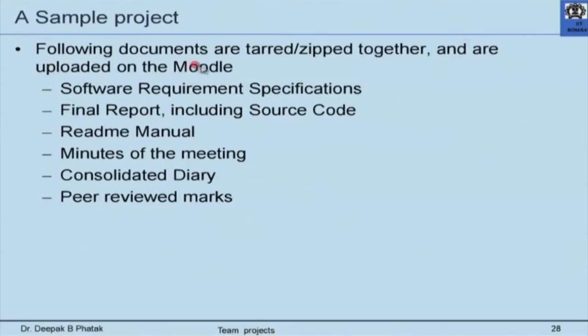We are going to implement this method again this year in CS101. As a sample I have included one sample project report from the 2011 batch on the Moodle — there are six submissions. These are the documents which are bundled together: a software requirement specification, a final report including source code, a readme manual, minutes of the meeting, a consolidated diary, and peer review marks.